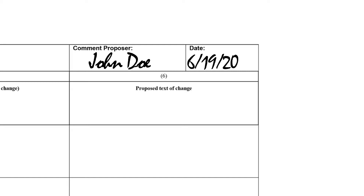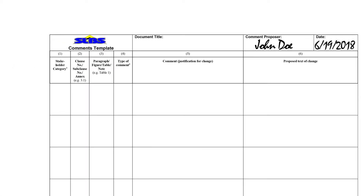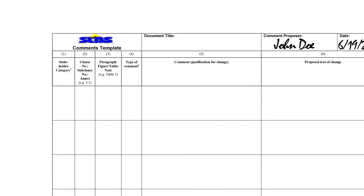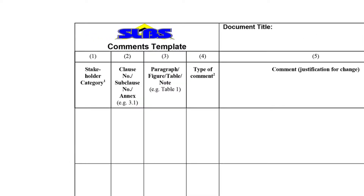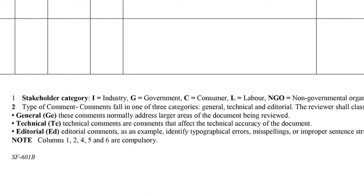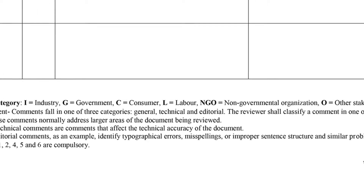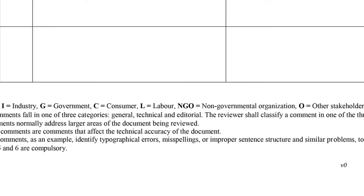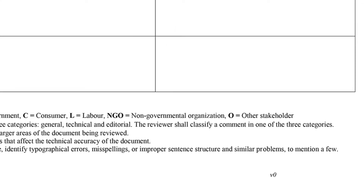After you write in the date, you go now to the comments part of it. This form has six columns. Column one is for the stakeholder category. The stakeholder categories we have are industry, government, consumer, labor, non-governmental organization, or if it doesn't fit in any of these, you put other.